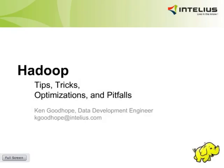My name is Ken Goodhope. I work for Intellius.com. We do people search and public record searches. We're located up in Bellevue, Washington — that's between Seattle and Redmond.